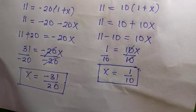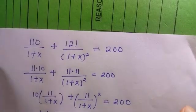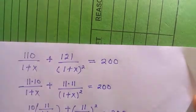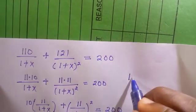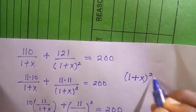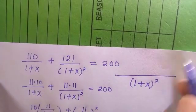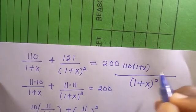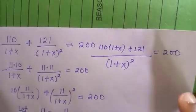We are now going to verify the two roots. The first method I applied is very effective. What we do is take the LCM of the left-hand side — the LCM is 1 plus X, raised to the power of 2. Taking this out, we have one thing bracket 1 plus X plus 121, all divided by 1 plus X squared, equals 200.